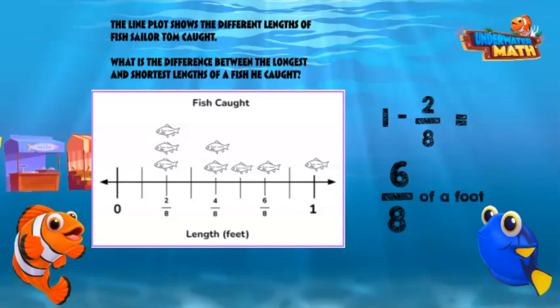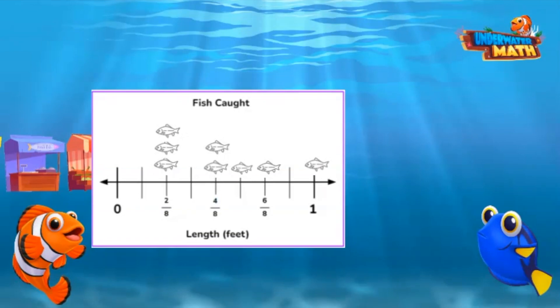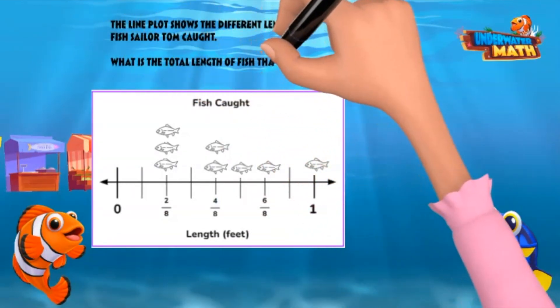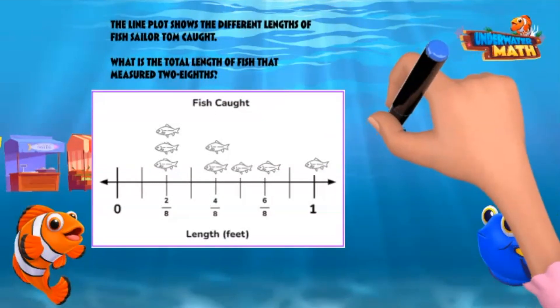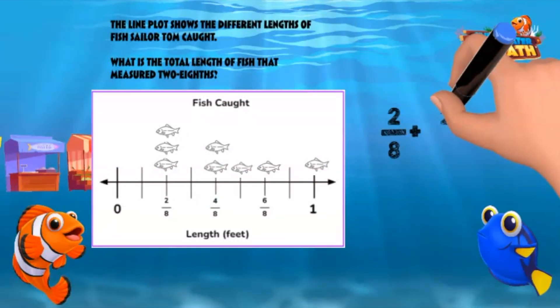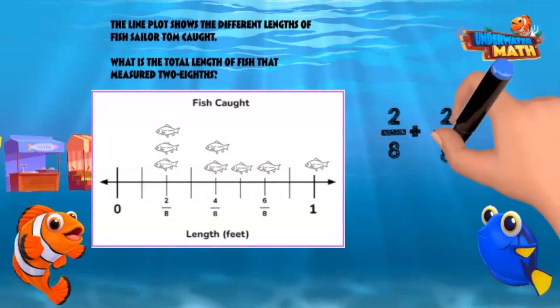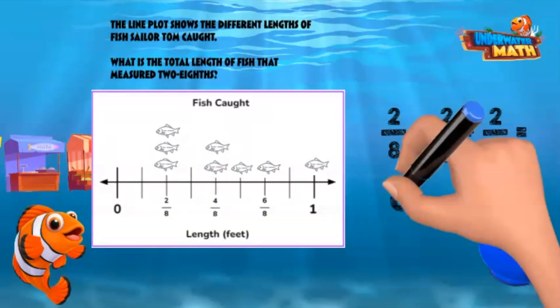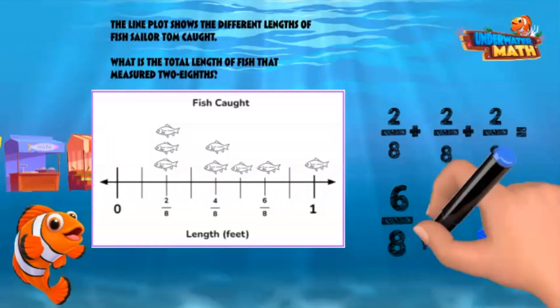Great job Celeste! Let's see what the second customer wants to know. They want to know, what is the total length of fish caught that measured two-eighths? So if we look above two-eighths there are three fish icons, meaning three fish measured two-eighths of a foot. If we add the three lengths together, two-eighths plus two-eighths plus two-eighths, we get six-eighths feet total.